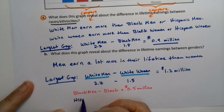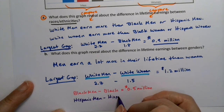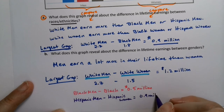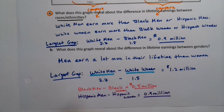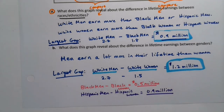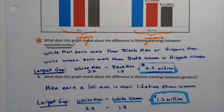Hispanic men minus Hispanic women was 0.9 million. The men are always earning more than the women, but the largest gap by a significant amount is white men minus white women — that is the largest gender gap at 1.2 million dollars. All of that can be determined rather quickly from a side-by-side bar graph, which is great for comparing within a group and across groups — two different types of comparisons that are really powerful.